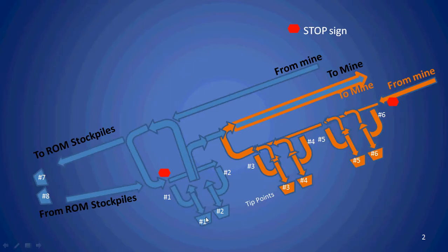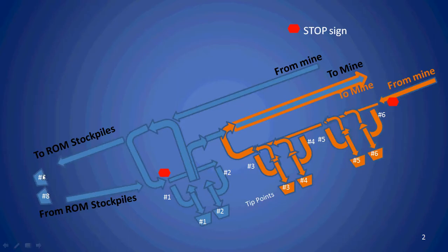If a truck comes down to the corner and stops, and the crusher isn't available due to breakdown or maintenance, there are queue trucks. The truck may go around and back out to the run of mine stockpiles, then tip at one of these tip points. In this case there are two tip points at the run of mine stockpiles.